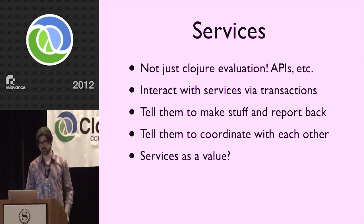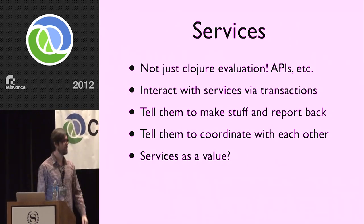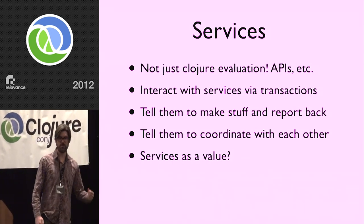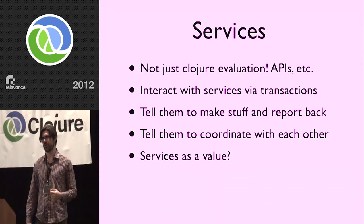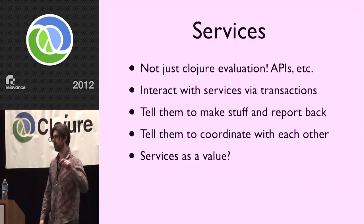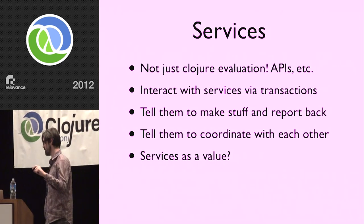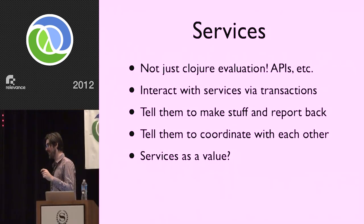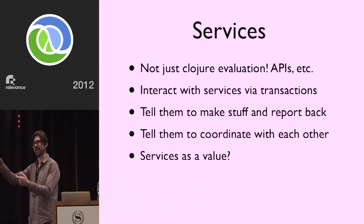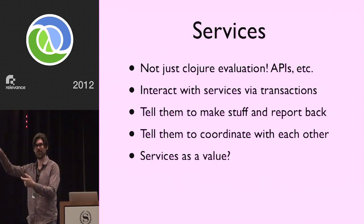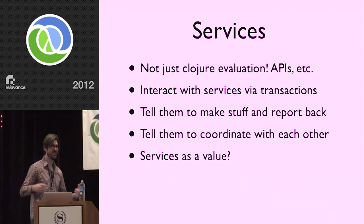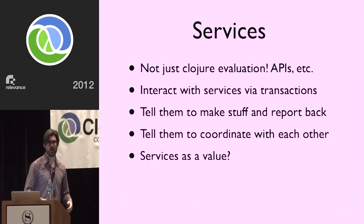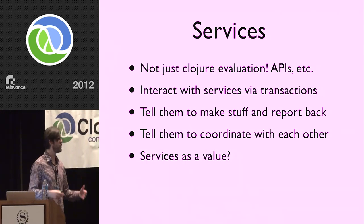Services are not just Clojure evaluation. If all we can do is Clojure evaluation, there's a hole in our model, because what we're doing in Clojure evaluation a lot of times is talking to all this other stuff. If that's not incorporated in our model, there's a huge hole. Furthermore, there's no need to have a Clojure dependency in order to talk to these services. If you're talking to the Twitter API, why should Clojure be a dependency in that path? You should be able to represent those things directly.